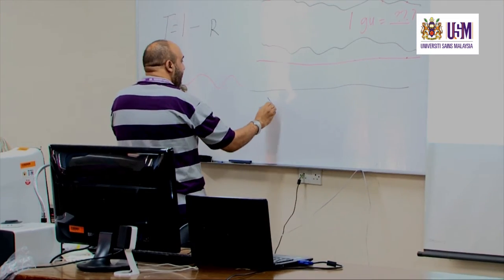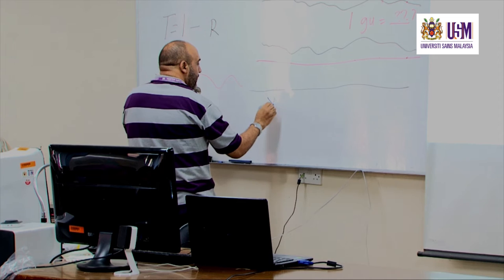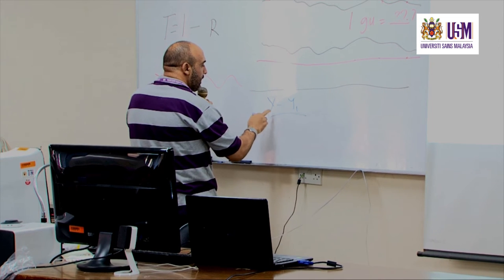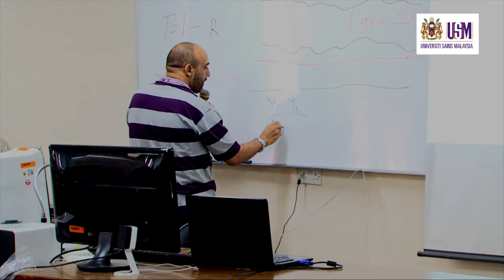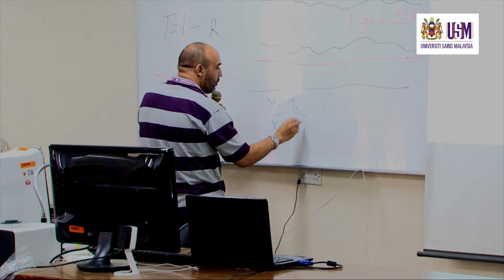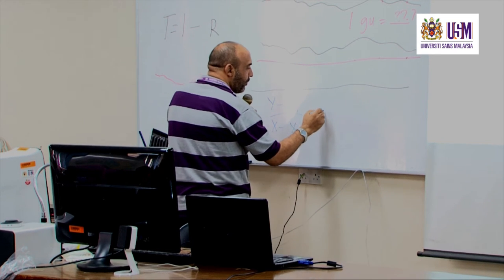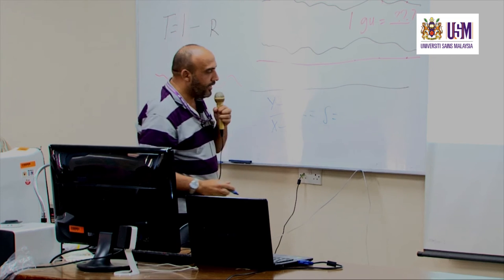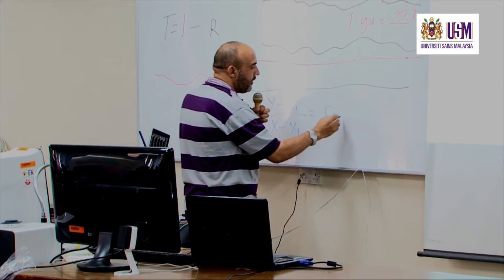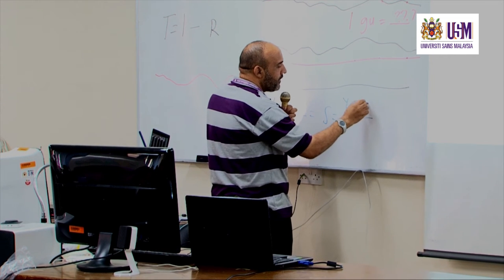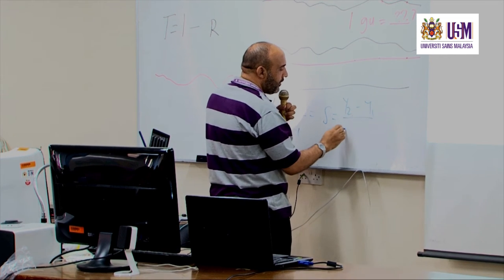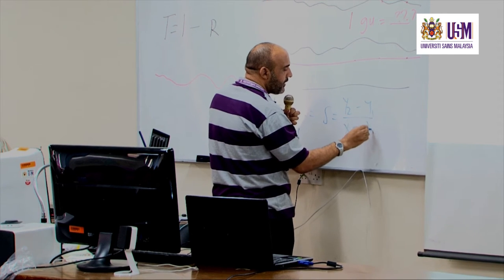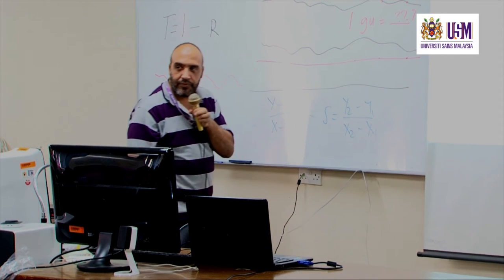It is like: Y minus Y₁ divided by X minus X₁ equals slope, and the slope itself equals Y₂ minus Y₁ divided by X₂ minus X₁.